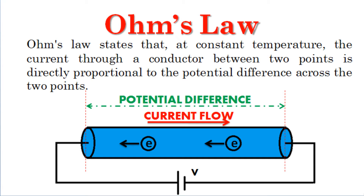Ohm's law states that at constant temperature, the current through a conductor between two points is directly proportional to the potential difference across the two points.